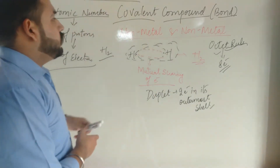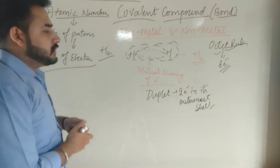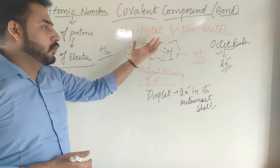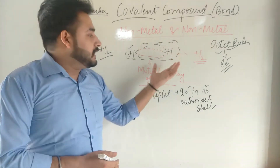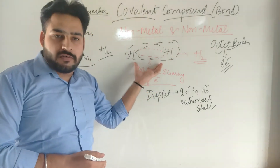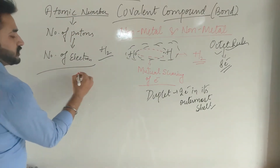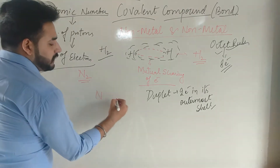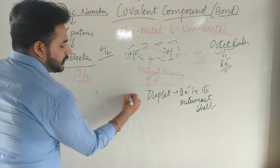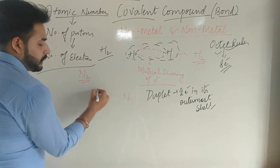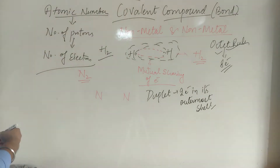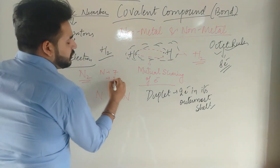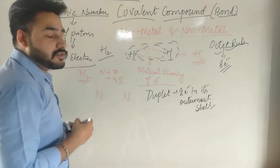So covalent bond is formed between non-metals and non-metals. The first example is H₂. The next example is nitrogen. In the case of nitrogen, the atomic number is 7, which means it contains 5 electrons in its outermost shell, not 7. The nitrogen atoms are attracted to each other's electrons — it is only a sharing pair of electrons, not a complete transfer of electrons.